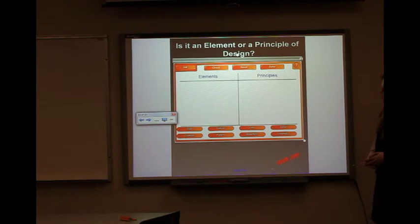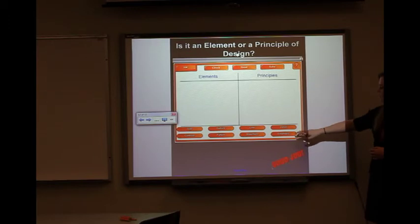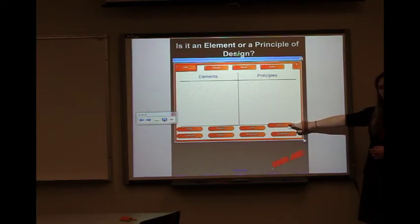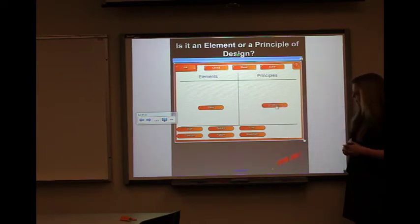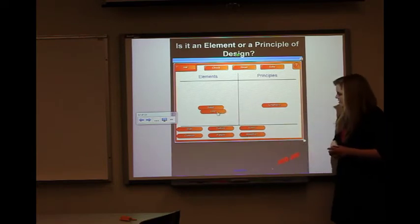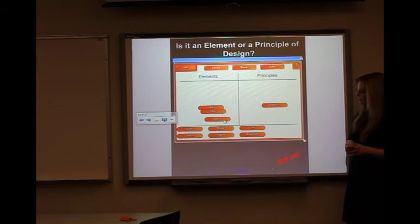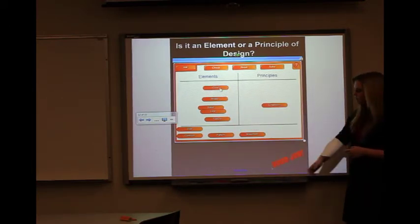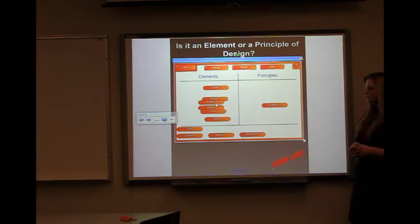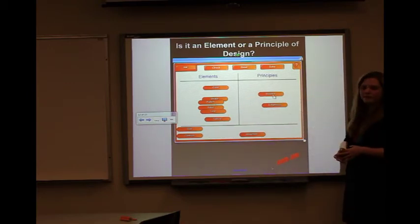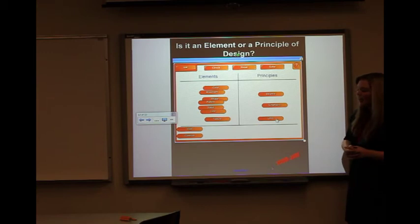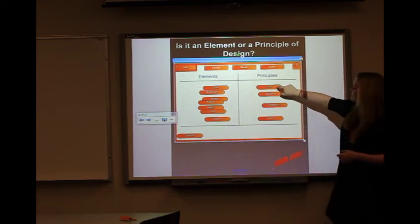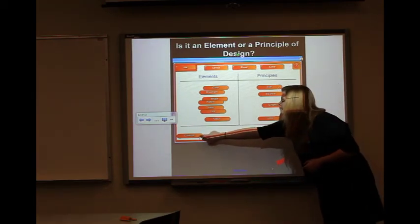We have a little quiz here, and we're going to sort the elements and principles of design into their categories. Can someone tell me what value is? Element. And emphasis? Principle. Line? Element. Texture? Element. Shape? Element. Color? Element. Pattern? Element. Balance? Principle. Movement? Element. Unity? Principle. Size? Principle. And contrast? Principle.